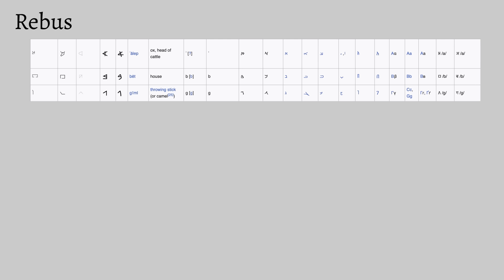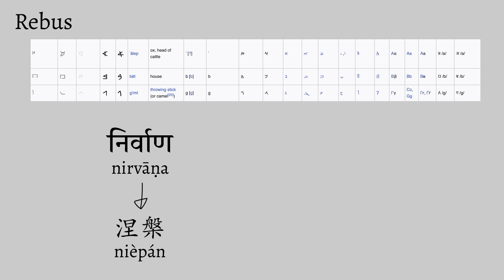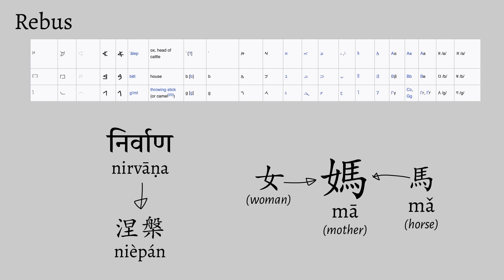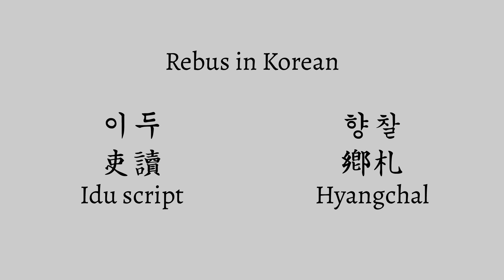Another method was to use Chinese characters for their given phonetic value, in a system known as rebus. Rebus as a concept wasn't new at this point — it's the basis for the modern segmental scripts descended from Egyptian. It's also used in Chinese for loanwords, like the Buddhist term 'Nirvana' becoming Chinese 'Niepan,' or to construct new characters, like how the character for horse, 'Ma,' lends its pronunciation to the compound character for mother, 'Ma.'